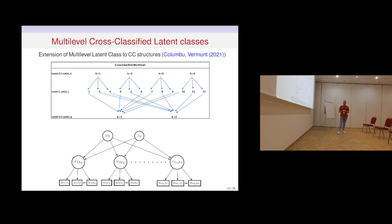Now I consider the extension to latent class analysis for our case of cross-classified structures. They are cross-classified when units can be classified along more than one dimension. In particular, we consider the case in which level-1 units are nested into two independent second levels. A typical example is students as the first level, simultaneously classified by the school they attend and the neighborhood where they live — so school and neighborhood are the two cross-classified second levels.